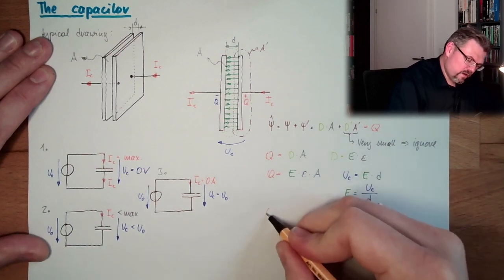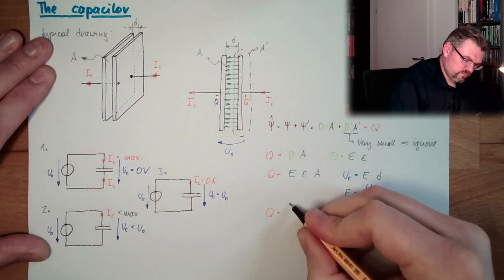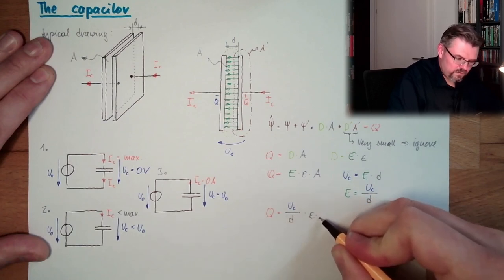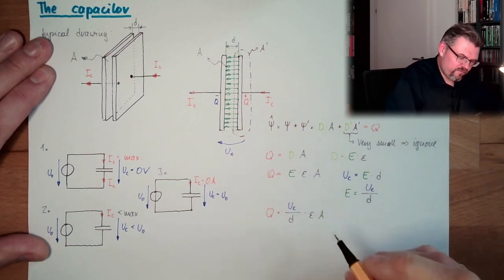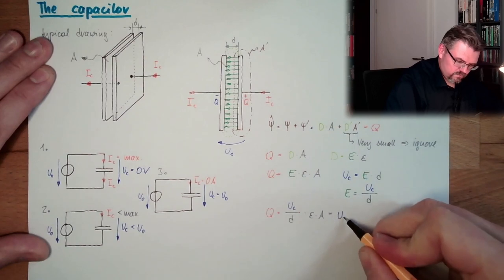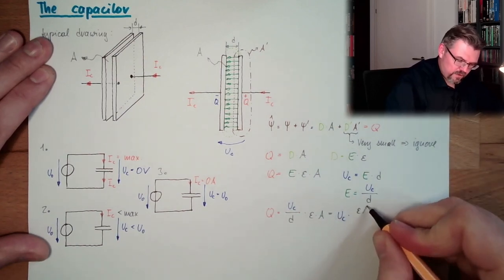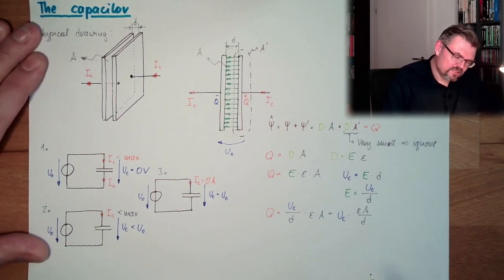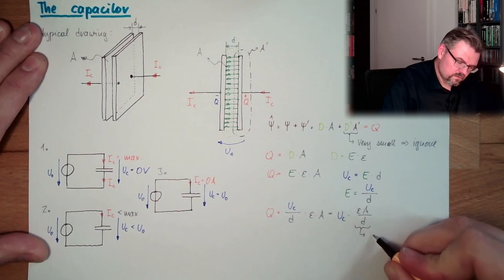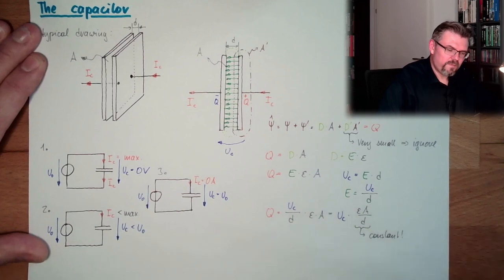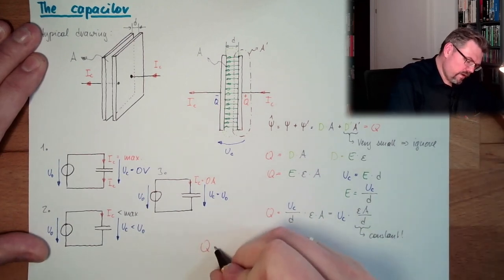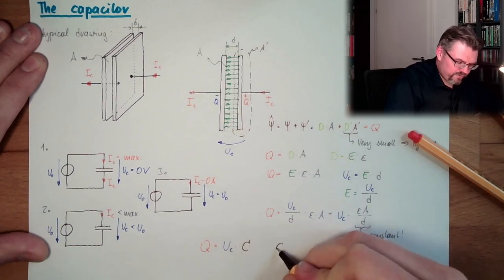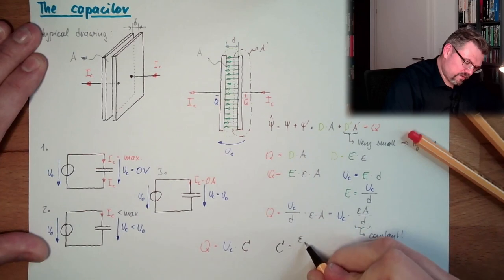Now I will enter this here. We have Q equals UC divided by D, multiplied by Epsilon, multiplied by A. Or, if I write it a little bit different, we have UC multiplied by Epsilon A divided by D. And here we see there is no current — this is constant. The formula is Q equals UC multiplied by C, with C equals Epsilon A divided by D.